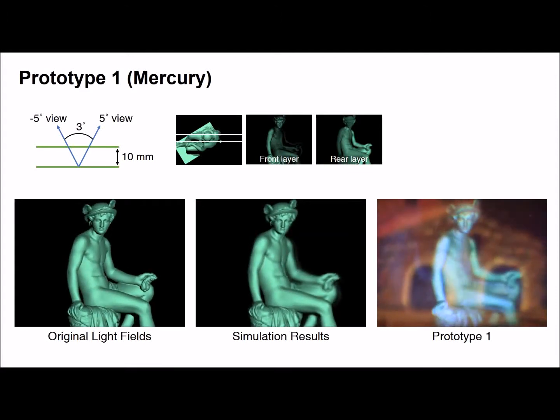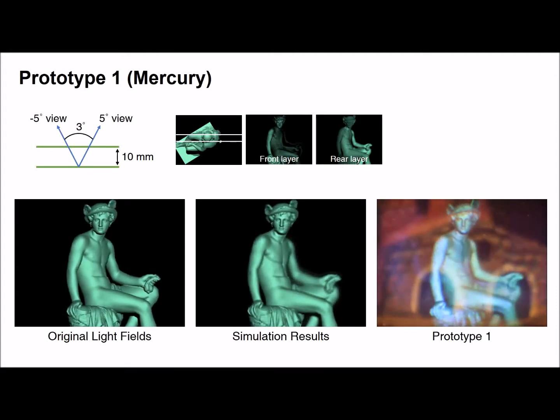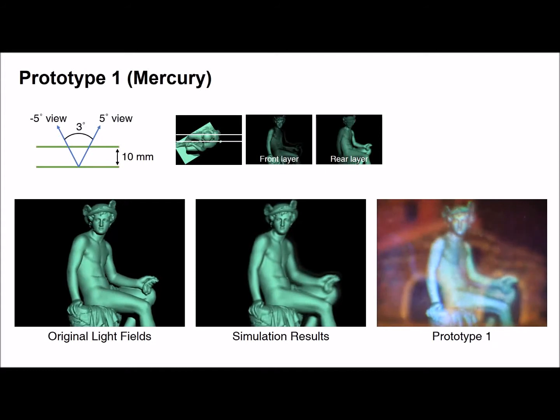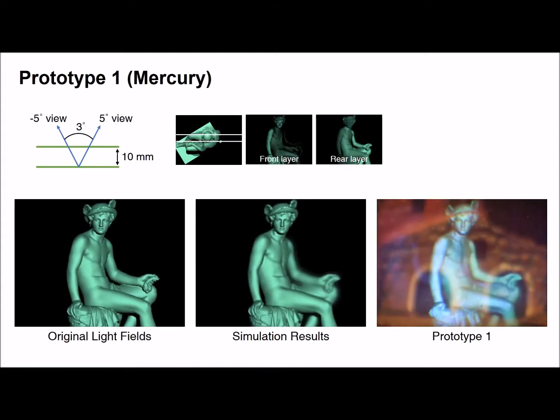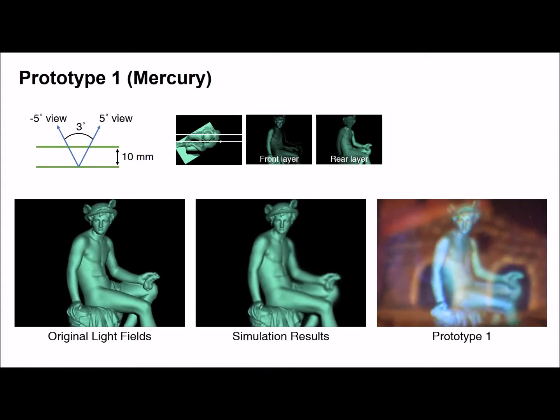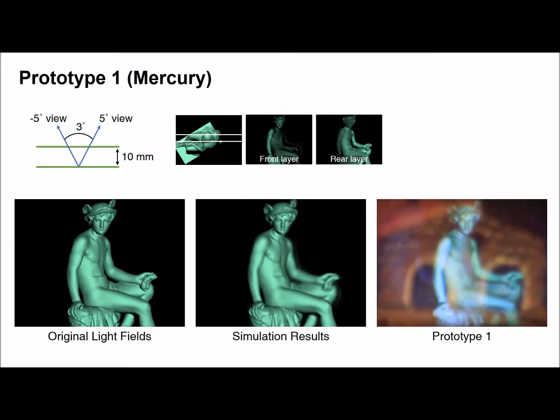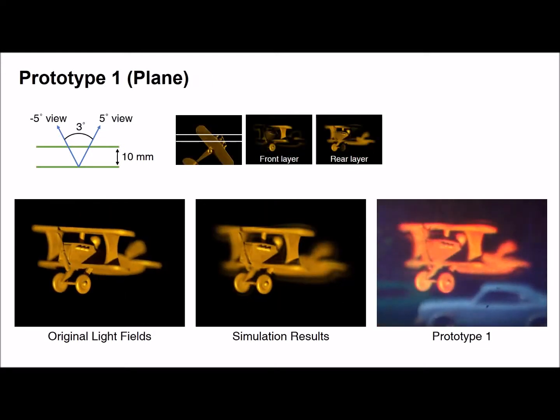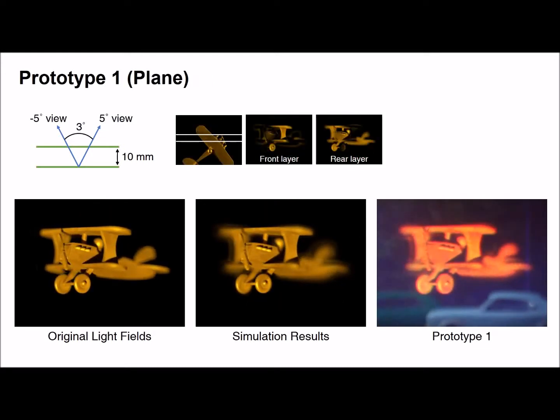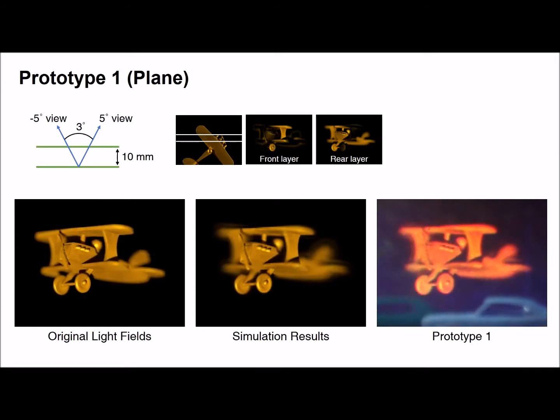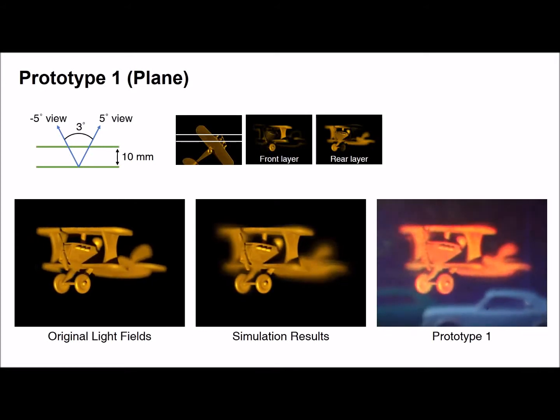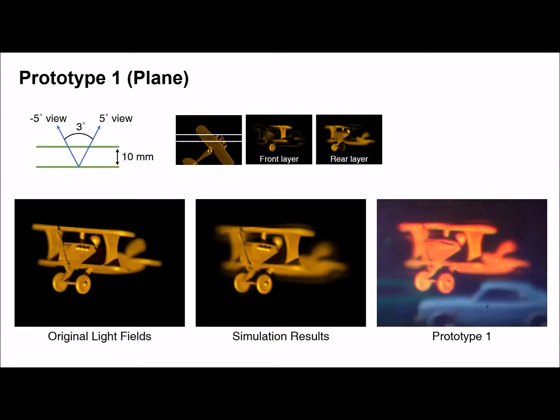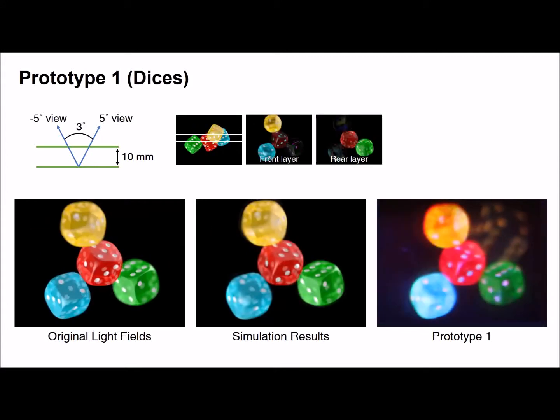We implement a prototype of the additive light field display. Original light fields, simulation results, additive layer images, and display results are demonstrated. In prototype 1, two additive layers are separated by 10 millimeters. While viewing angle is set to 3 degrees, target light fields within 10 degrees are utilized in order to demonstrate definite parallax views.